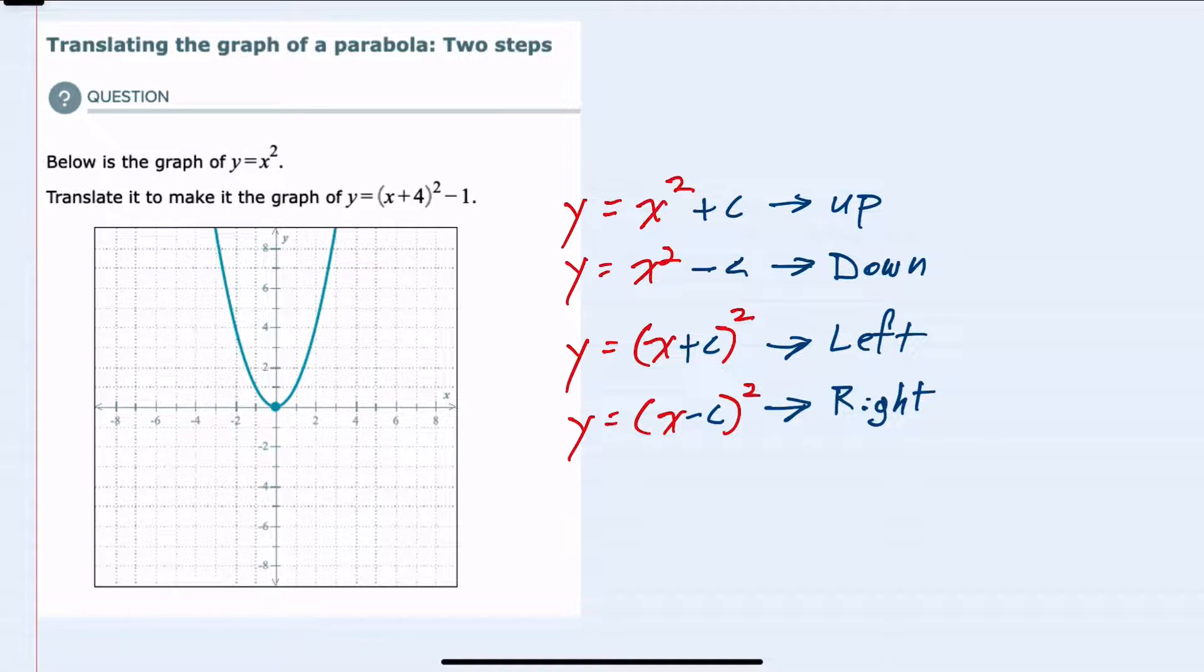So in this case, we are subtracting 1 from outside the parentheses, so that would shift things down 1 unit. So that center would shift down 1. But then inside the parentheses, we are adding 4, so that would shift things to the left 4 units. So I've already shifted down 1. Now I'm going to shift to the left 4 units.